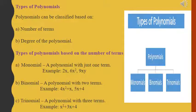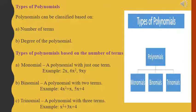After the introduction of polynomials, let's see the classification of polynomials based on the number of terms in an expression and the exponent of the variable. The first classification is based on number of terms. If an expression consists of only a single term, it is called a monomial. For example: 2x, 6x squared, and 9xy.